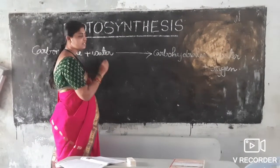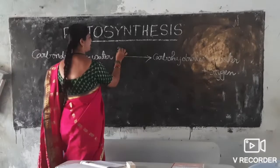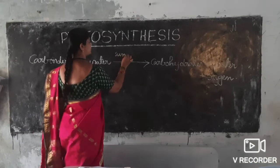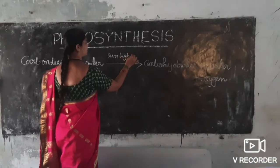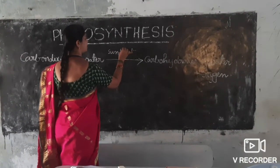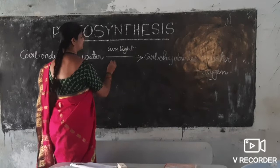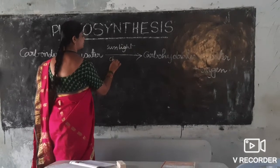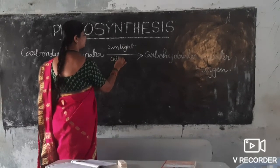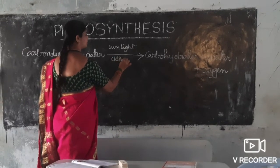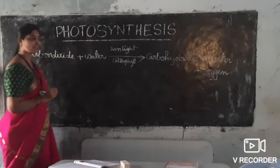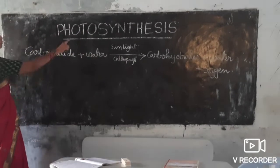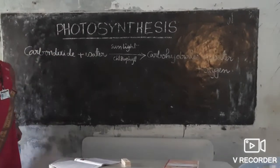This process takes place in the presence of sunlight and chlorophyll. So children, this is the equation for photosynthesis.